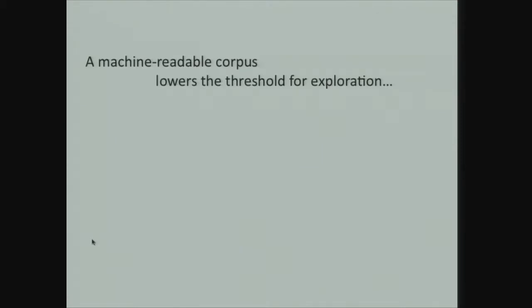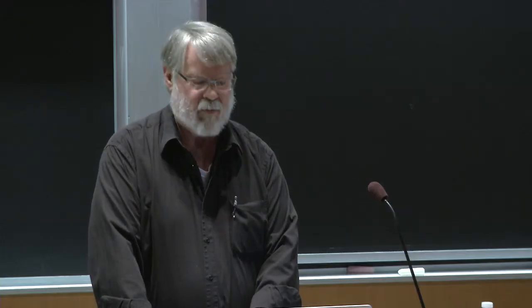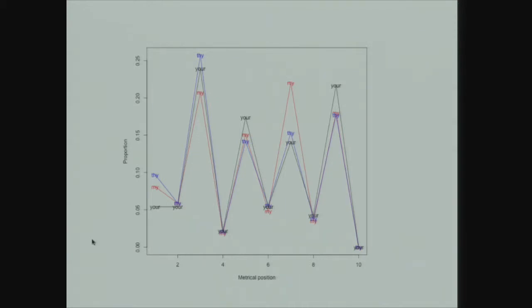The nice thing about this kind of machine-readable corpus is that it lowers the threshold for exploration. During the session yesterday I engaged in a few minutes of coding and did the following. This shows the relative frequencies of 'thy,' 'my,' and 'your' by position in the ten-syllable line. Unsurprisingly, their relative frequency follows the iambic pattern — they're commoner in the odd positions than in the even positions. There's also some modulation reflecting general metrical strength and aspects of English syntax and perhaps Shakespeare's style.